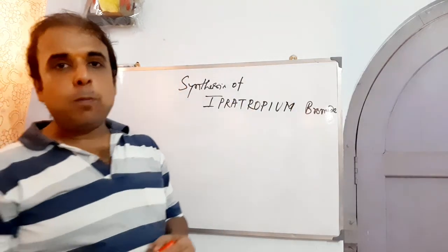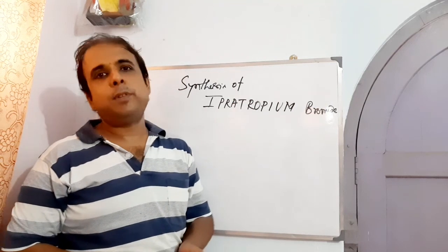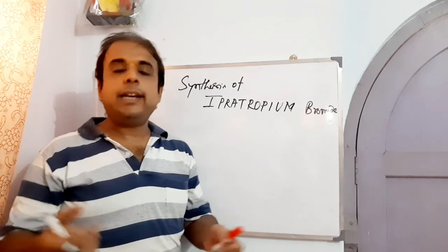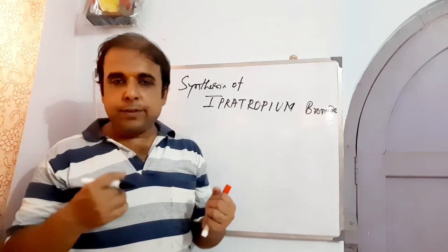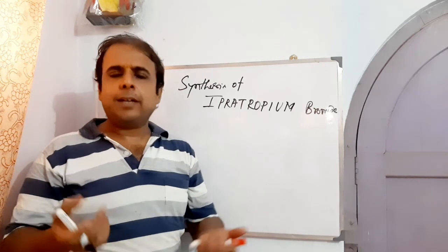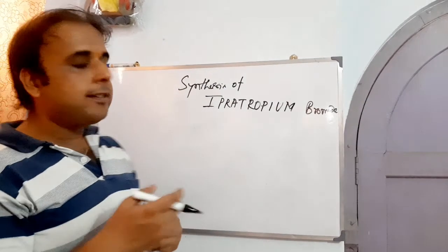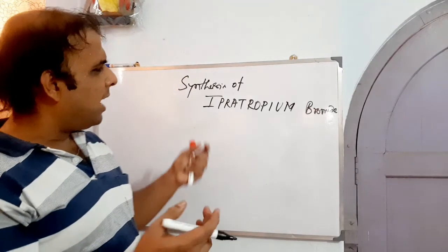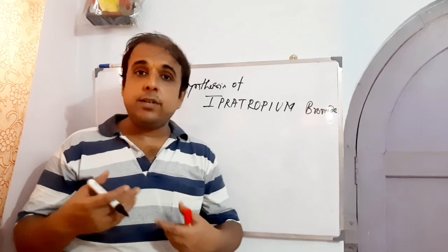Ipratropium bromide is an example of an anticholinergic. We all know that cholinergic receptors can cause bronchial bronchoconstriction. So definitely antagonizing the cholinergic receptor and cholinergic stimulation eventually leads to the expansion of bronchial airways, which is found to be beneficial for patients suffering from asthma and can be given along with certain drugs which have shown a synergistic effect.